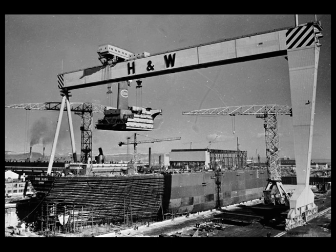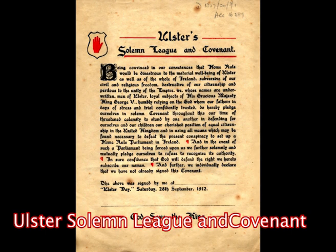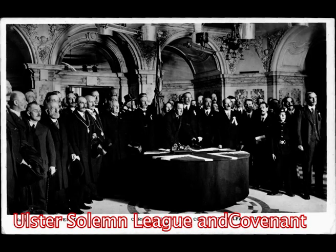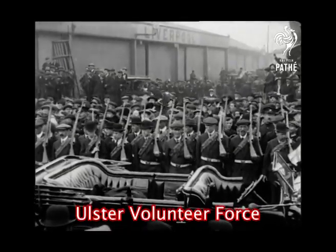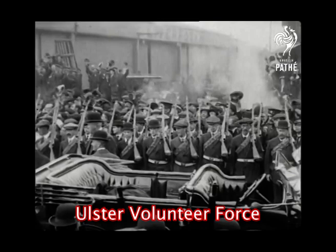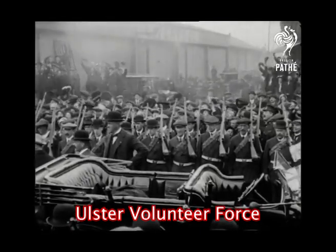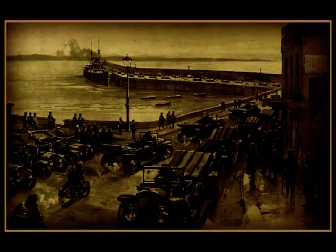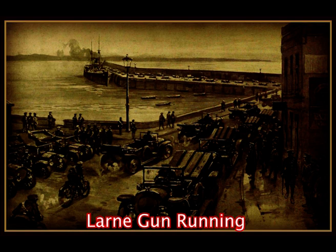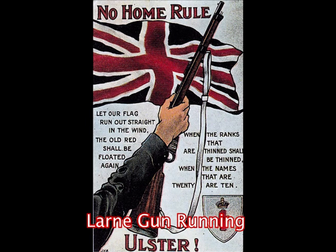They took two main actions in response to the Home Rule Bill. One, in 1912, 240,000 men and 230,000 women signed a petition called the Ulster Solemn League and Covenant, pledging to do whatever it takes to stop Home Rule coming into Ireland. There are rumours that some even signed it in their own blood. Two, they formed the Ulster Volunteer Force, who vowed to use violence to prevent Home Rule. They imported rifles in the Larne gunrunning in Antrim, and by the summer of 1914 they had over 37,000 weapons. British soldiers did not stop them, as some officers were sympathetic to the Unionist cause.